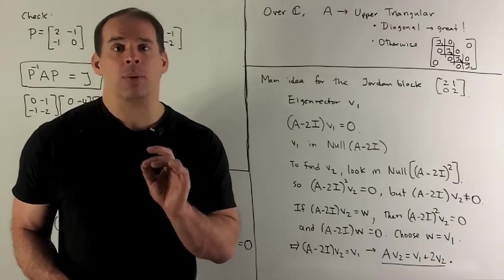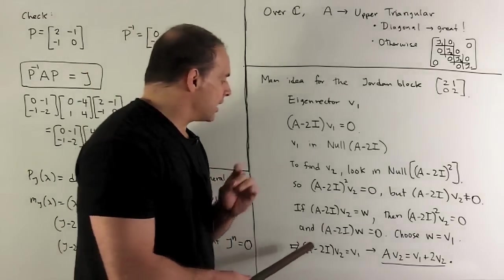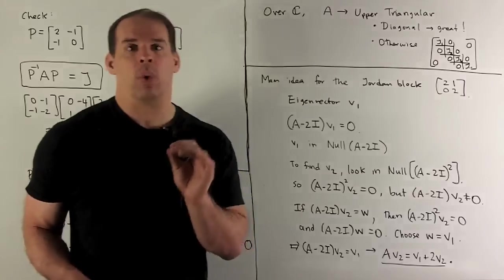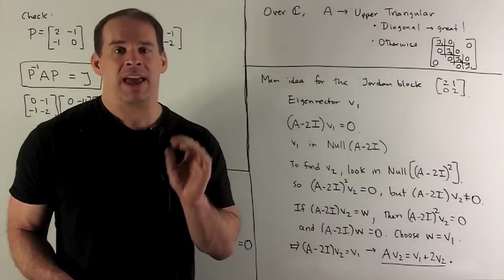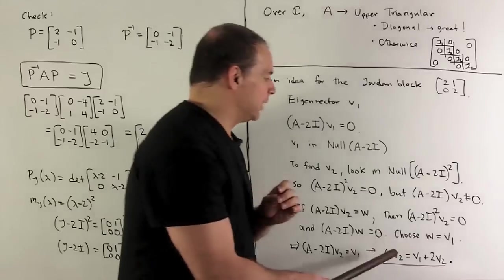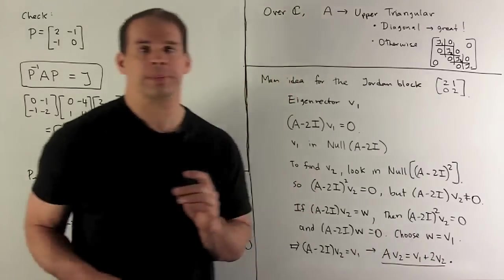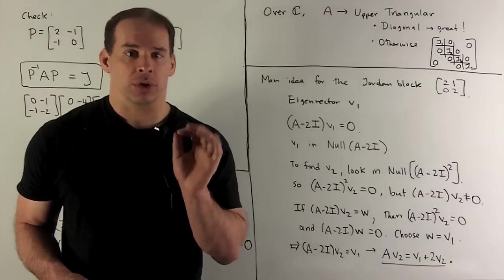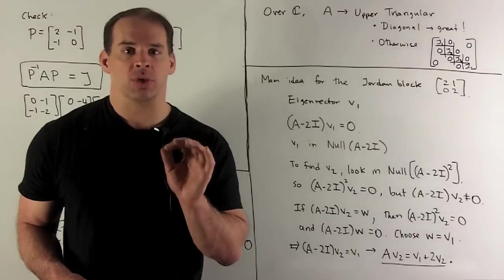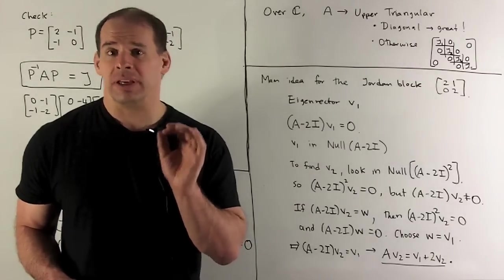If I do that, what happens? Then I have (A - 2I)V2 = V1. I push 2V2 to the other side, and then I have AV2 = V1 + 2V2. That's how we get the second column of our Jordan form. You'll note the reason that works is because we let W be equal to V1.